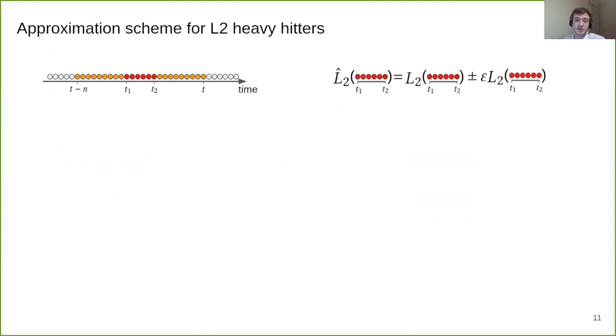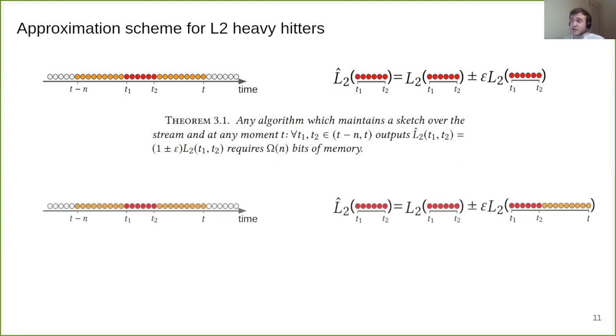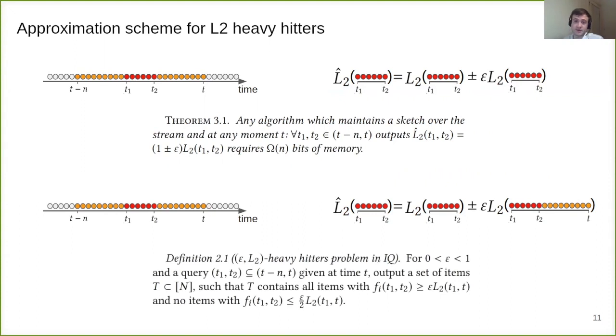First, we discuss the approximation scheme. We show that vanilla multiplicative approximation for L2 norm and heavy hitters leads to polynomial memory. Thus, we decide to adjust the approximation scheme. We find the middle ground between additive error and multiplicative by introducing error which is multiplicative on the tail. That is L2 norm of interval T1 T2 is approximated with epsilon times L2 norm of tail T1 T. We adjust this definition for the heavy hitters accordingly by defining the heavy hitter as an item which appears more than epsilon fraction of the tail T1 T.